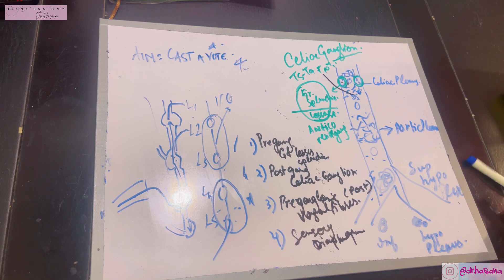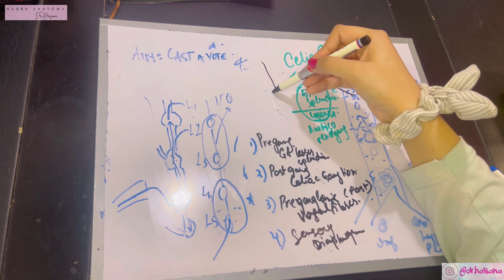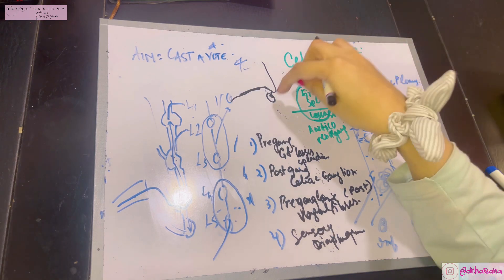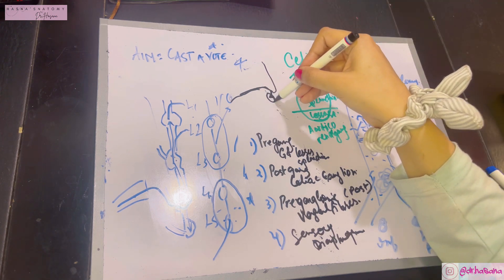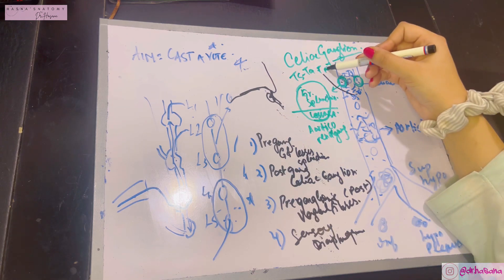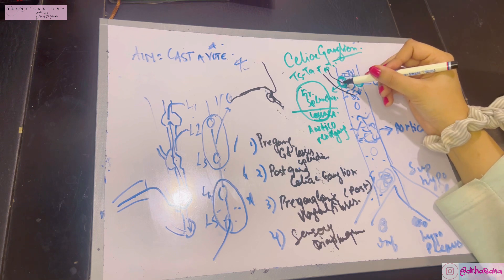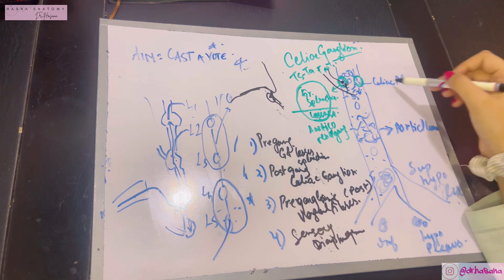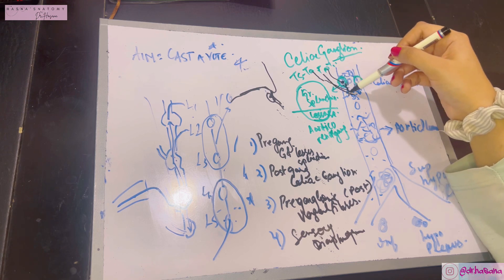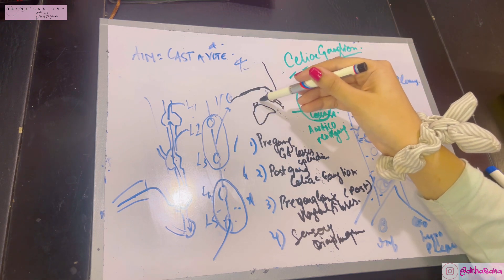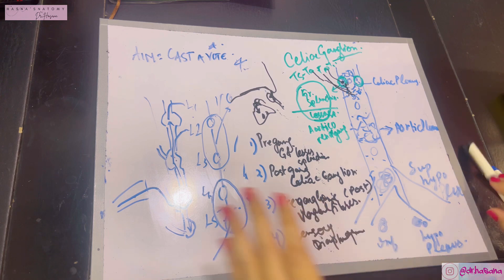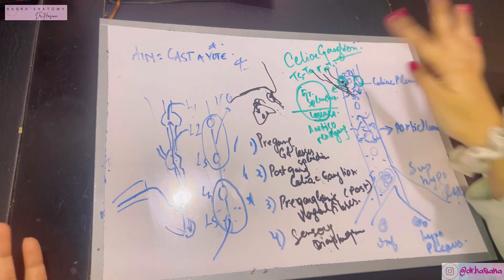Returning to the analogy: fibers can travel as grey rami communicantes as lateral branches by synapsing within the main ganglion of the sympathetic chain. Or they can become medial branches — which are always preganglionic — going all the way to the celiac ganglion where they become postganglionic and enter the celiac plexus. Or a sympathetic fiber can go directly into the plexus without synapsing at the celiac ganglion, and instead synapse at ganglia close to the organ, such as the liver, and supply it there.